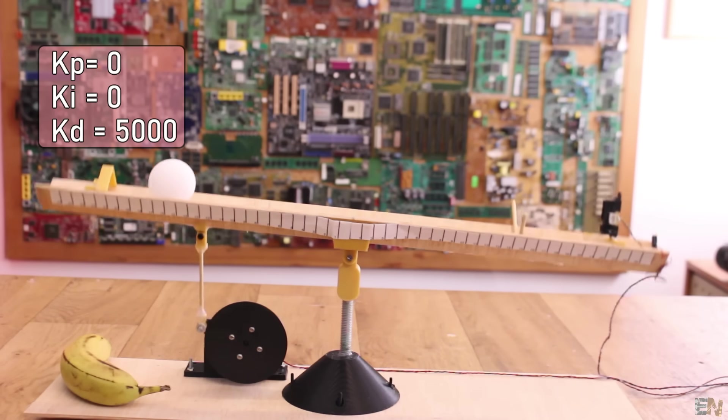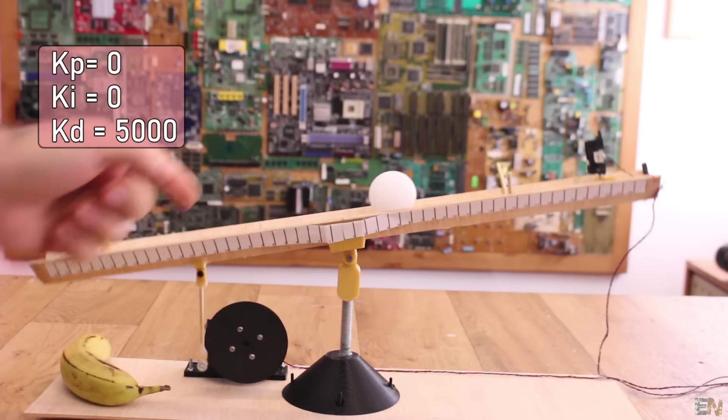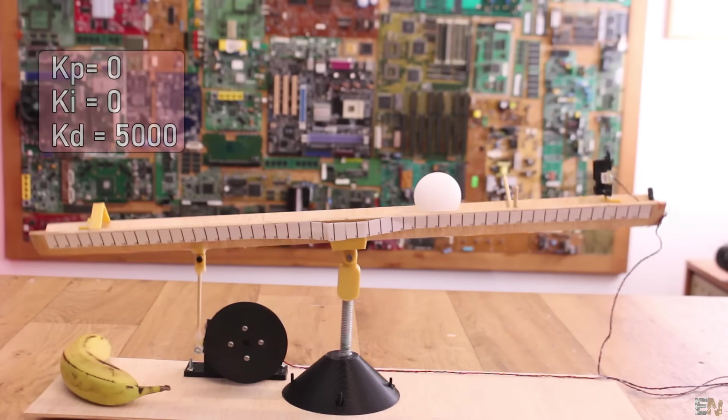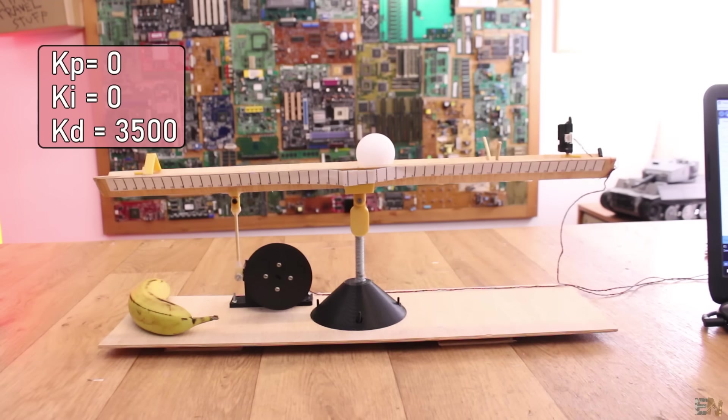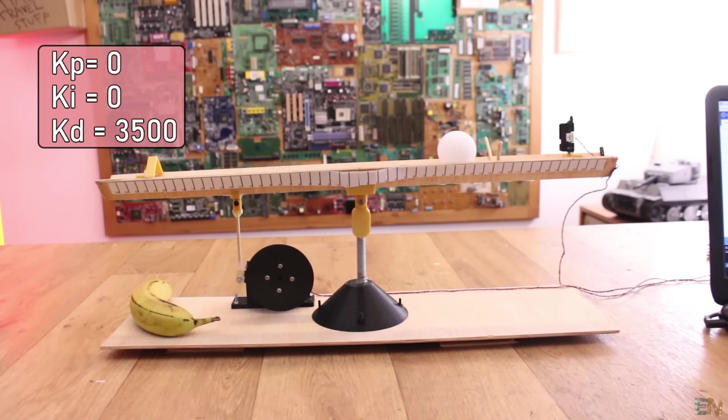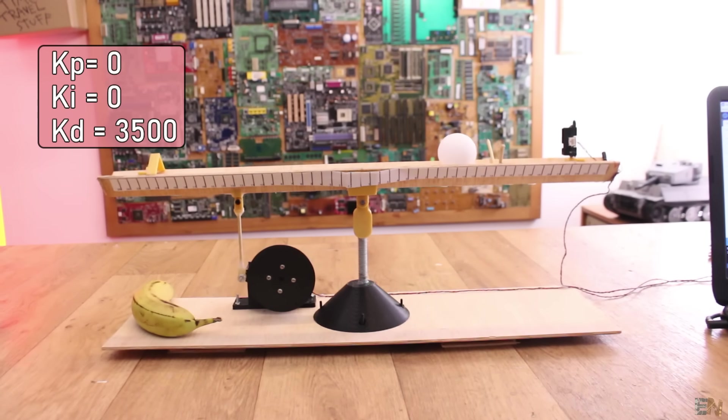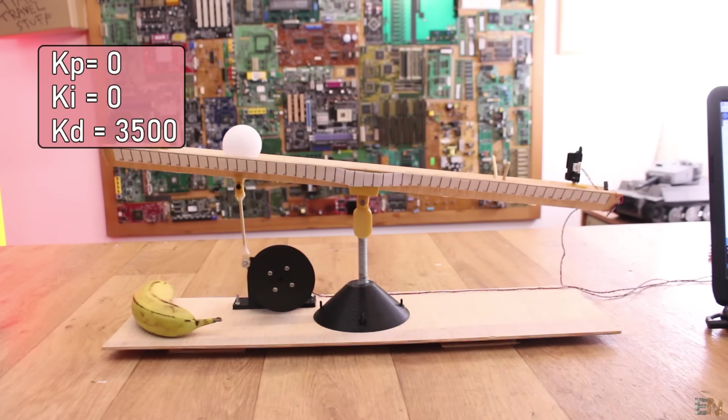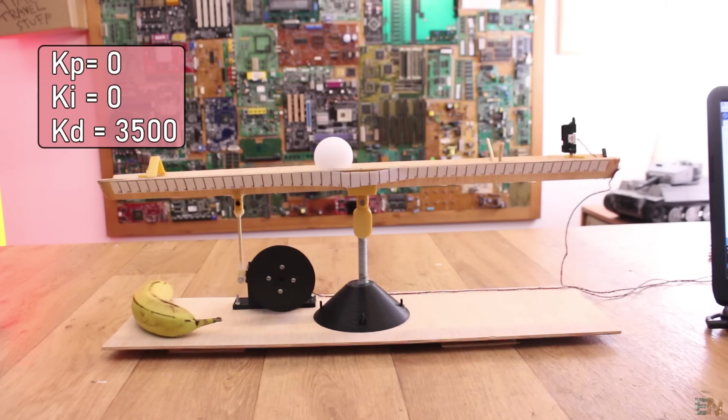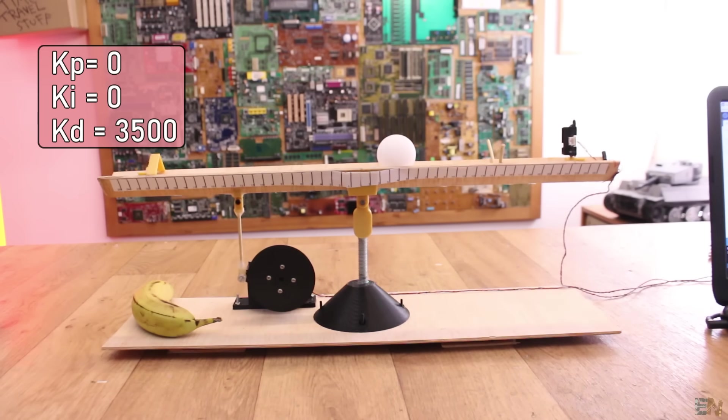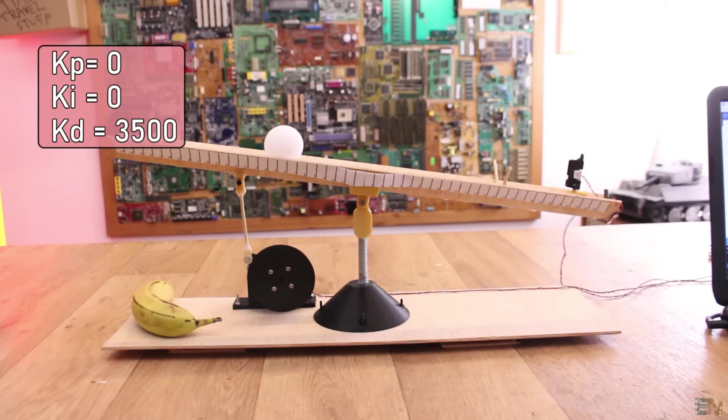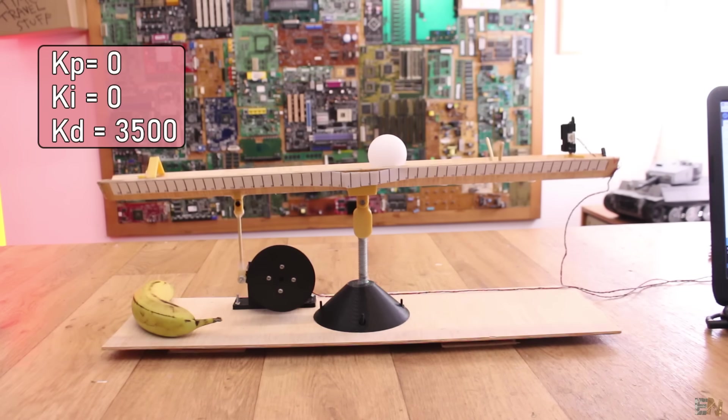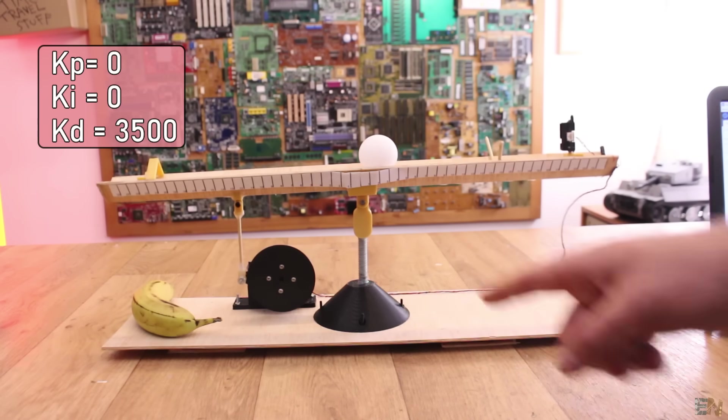The reaction to the speed of the ball is too strong, so we have to lower the value. So now I set the KD to 3500. Now as you can see, the system reacts very fast to the speed, not to the distance anymore, and by that it will stop the movement. But now we have a different problem. Now the ball will stop in any position, and we don't want that. We want it to stop exactly in the middle.